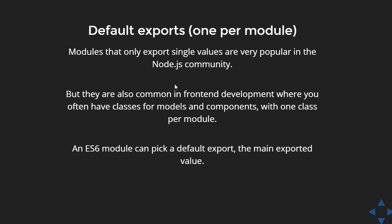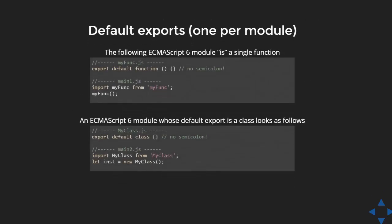A default export is used whenever you have a single entity — a single function or a single class — in your file. You have only a single value to be exported from that file. For example, a function that is the only function in the file can be written as export default, with no need to give it a name. It is like an anonymous function, which can be imported with any name — for example, import xyz from this — and xyz will represent that function.